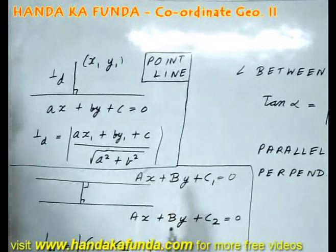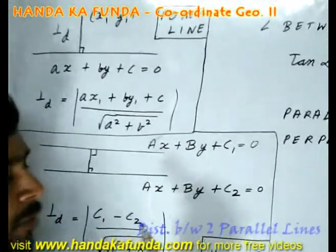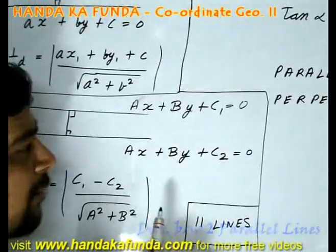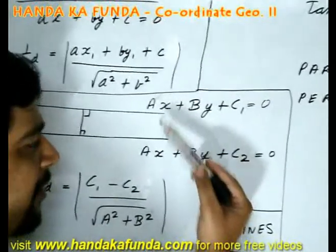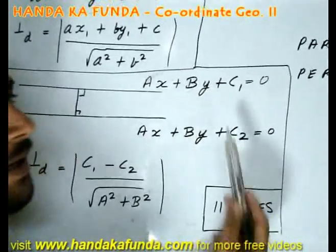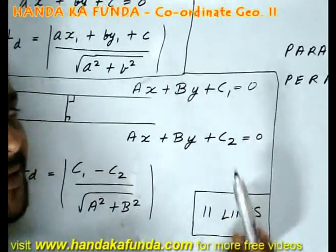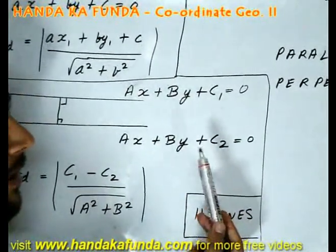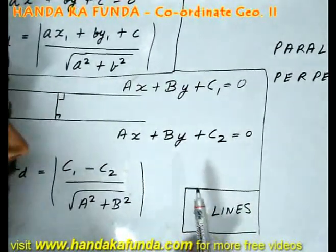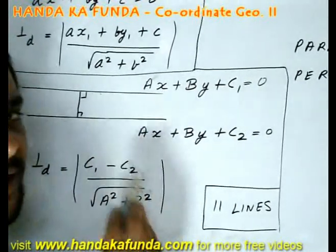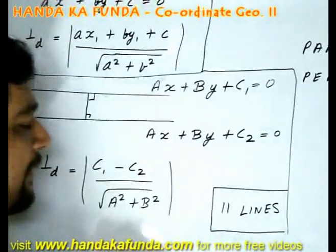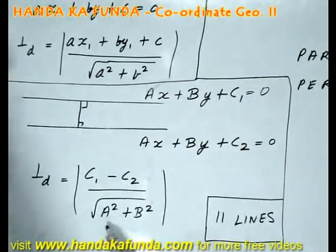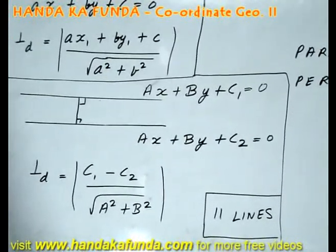What if I am given two lines which are parallel to each other? If the two lines are parallel, that would mean their x coefficient and y coefficient will be equal to each other. So it will be of the format ax plus by plus c1 and ax plus by plus c2. However, their constant terms have to differ, which I have taken as c1 and c2. If they don't differ, it will become the same line. So if they differ, there will also be a perpendicular distance between them, and that distance can be found by taking the mod of c1 minus c2 divided by square root of a square plus b square.